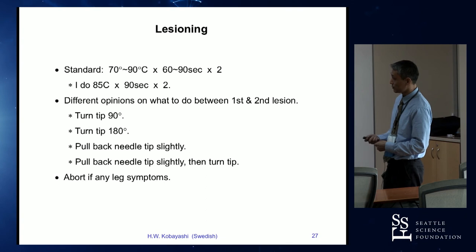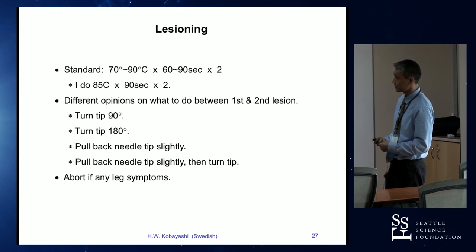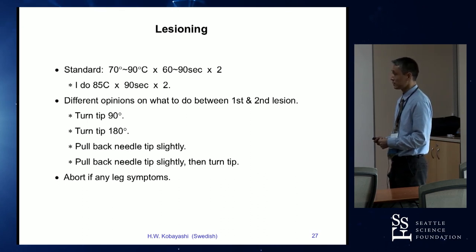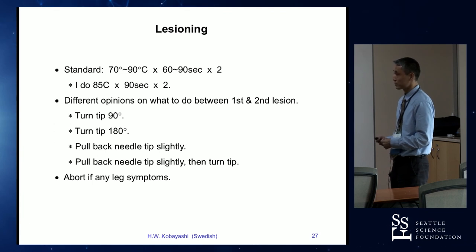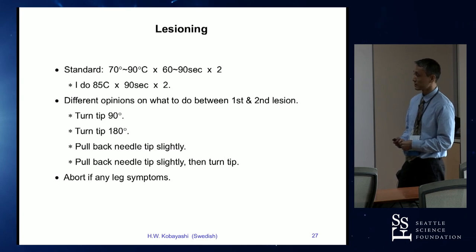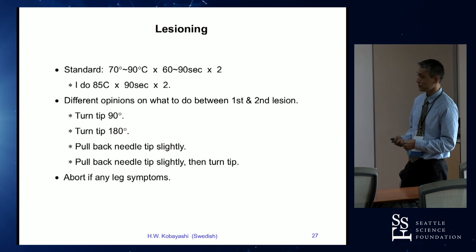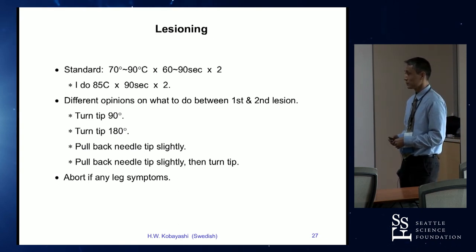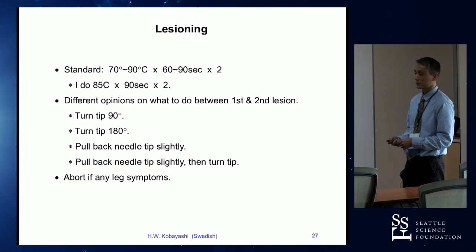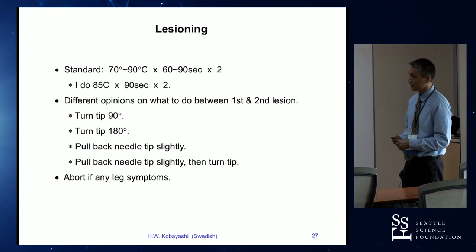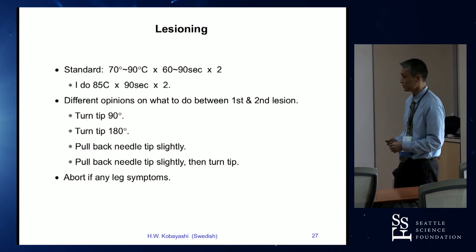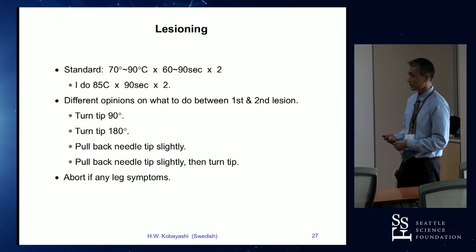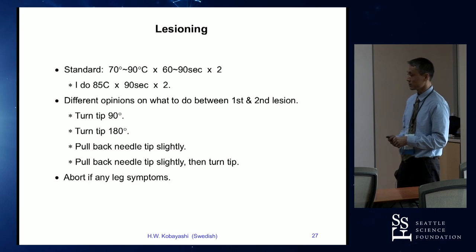Most people will lesion at 70 to 90 degrees Celsius, 60 to 90 seconds, and many of us do two lesions. I personally do 85 degrees, 90 seconds, two lesions. In between the two lesions, I reposition the needle tip a little bit — different people do different things. Some turn the tip 90 degrees, others 180 degrees; I personally pull back the needle tip a little and then turn the tip. During the lesion, it's very important to abort the ablation right away if the patient complains of any leg symptoms.